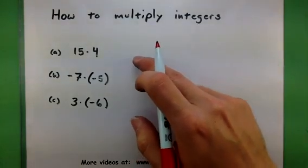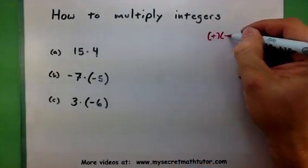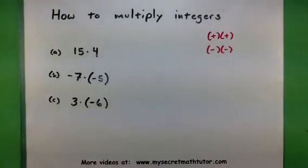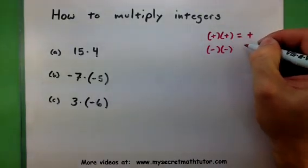So here's the rules. If you have two integers that are the same sign, so maybe they're both positive, or maybe they're both negative, when you multiply them together in these situations, you will get a positive number.